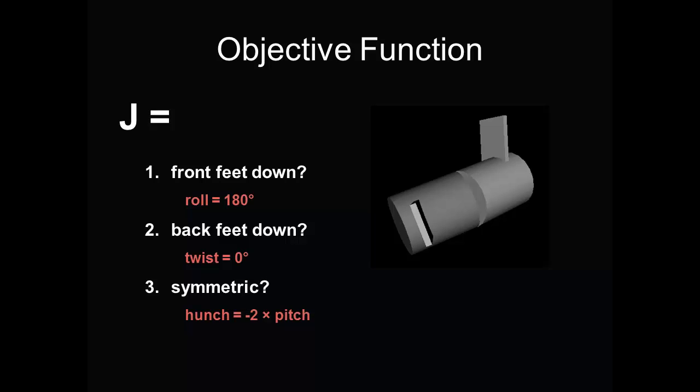Given our models, how can we simply capture this biological motion? We need a clear objective function defining what it means to be flipped. As seen here, we started with only three terms. The first ensures that the front feet are down. The second does the same for the back feet. The third dictates that the cat land with a symmetric hunch. Note that the degrees of freedom between the halves of the model are referred to as twist, hunch, and wag.